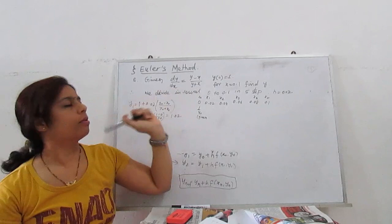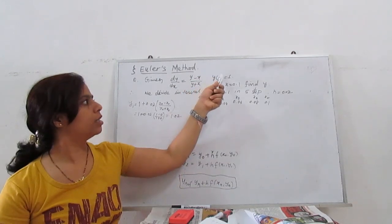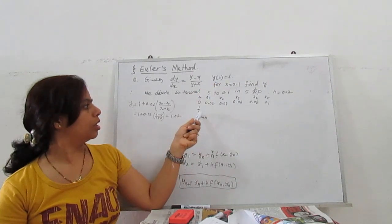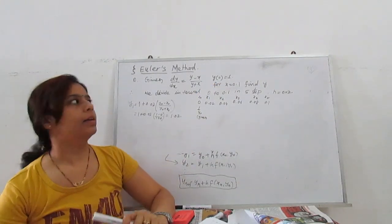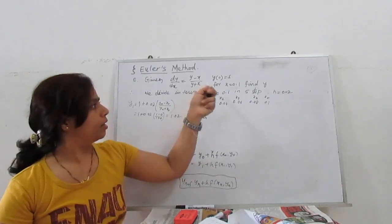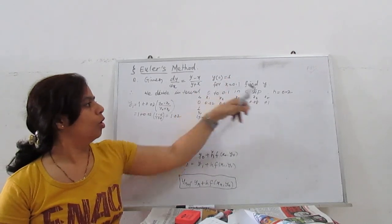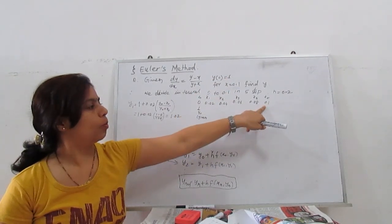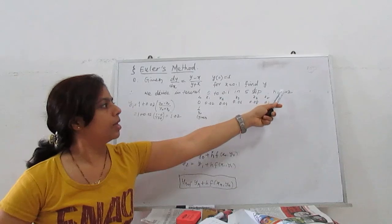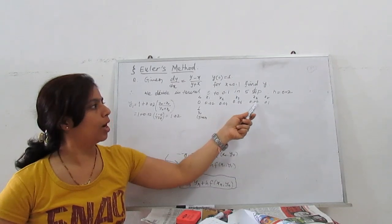Given dy/dx = (y minus x) divided by (y plus x), with initial values x0 = 0 and y0 = 1. Using the Euler method, find y at x = 0.1. We divide the interval from 0 to 0.1 into 5 steps, so h = 0.02. The x values are x1 = 0.02, 0.04, 0.06, 0.08, and 0.1.